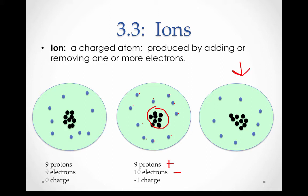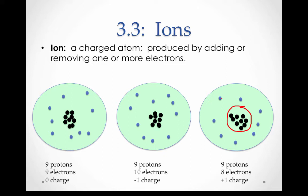In this third atom, we still have nine protons, but we have eight electrons. Since we have nine positives and eight negatives, that gives us an overall positive one charge. It's this imbalance between positives and negatives that creates ions. It's important to note that in each case, the number of protons remained the same. Recall the number of protons determines what element you have. The number of electrons, however, can change without the element changing. Only the charge changes when the electrons change.